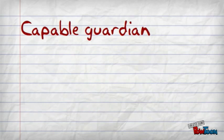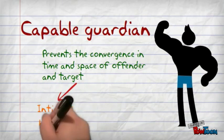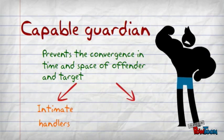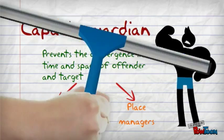A capable guardian protects the target. We are guardians over our own property. The revised model has included elements which control offenders and protect place. Parents or parole officers exert an influence over a likely offender, while security guards and receptionists have a responsibility over a particular place.